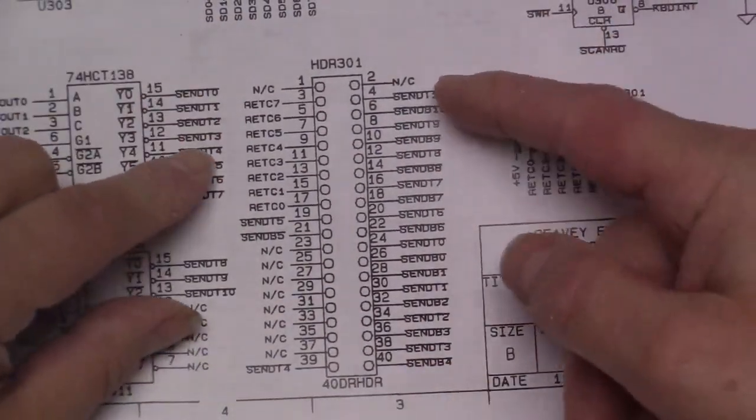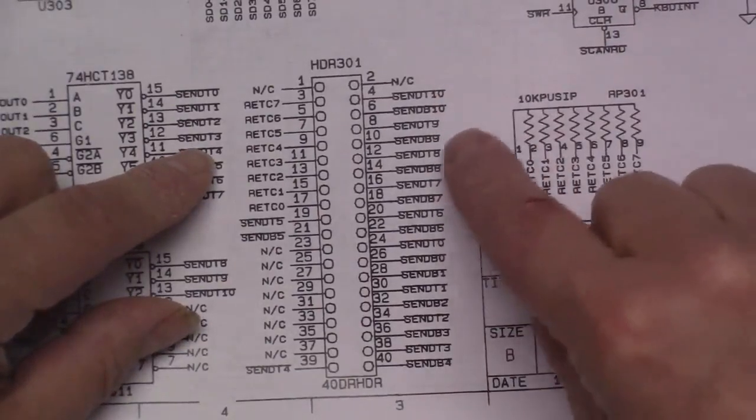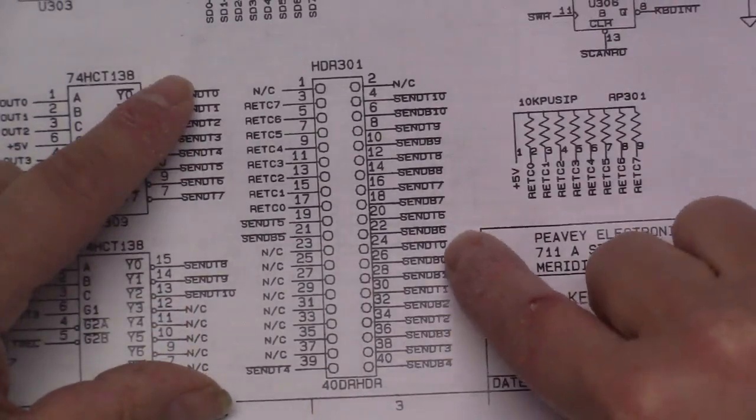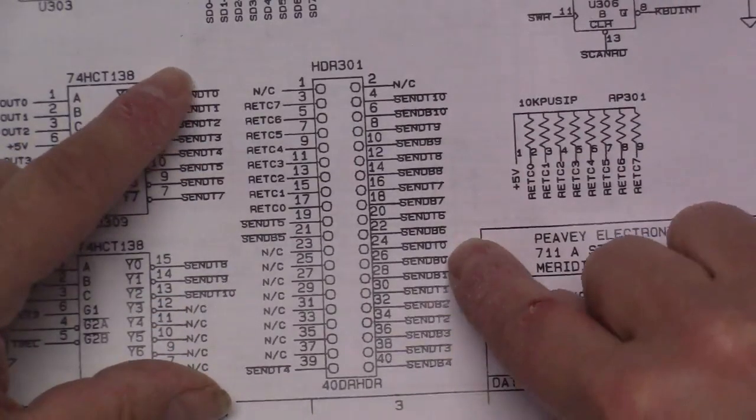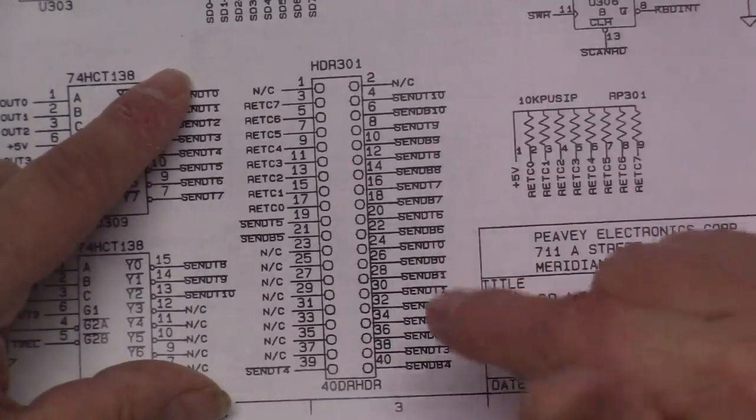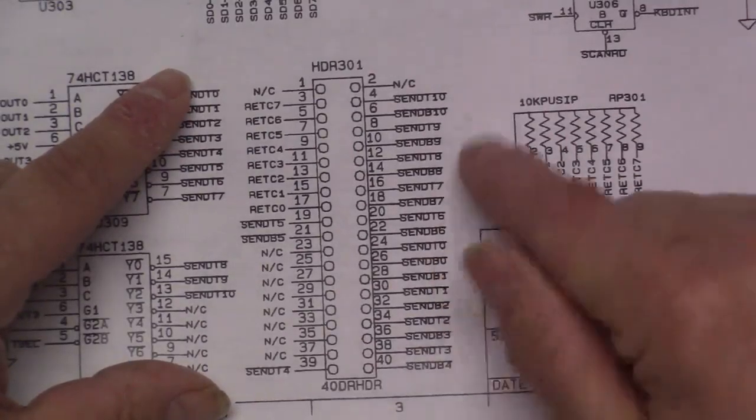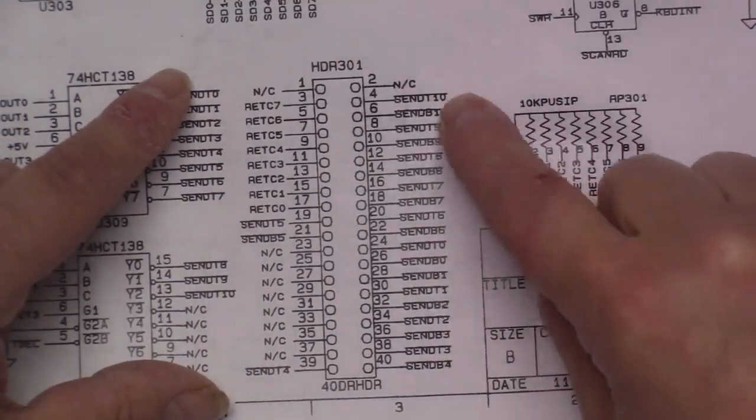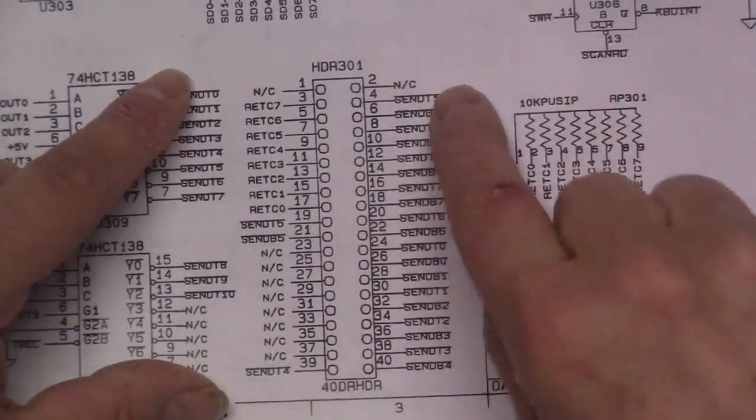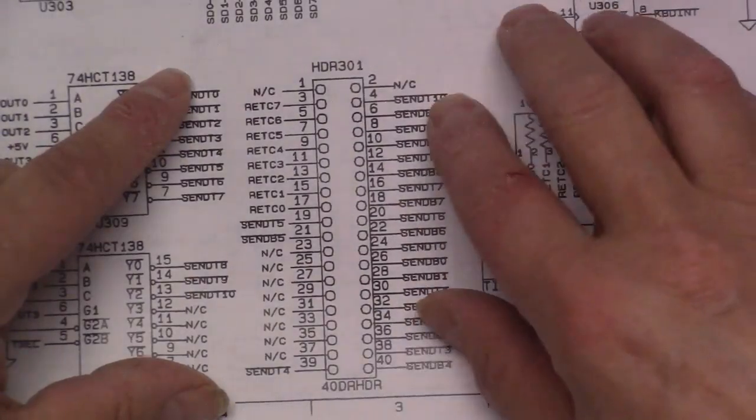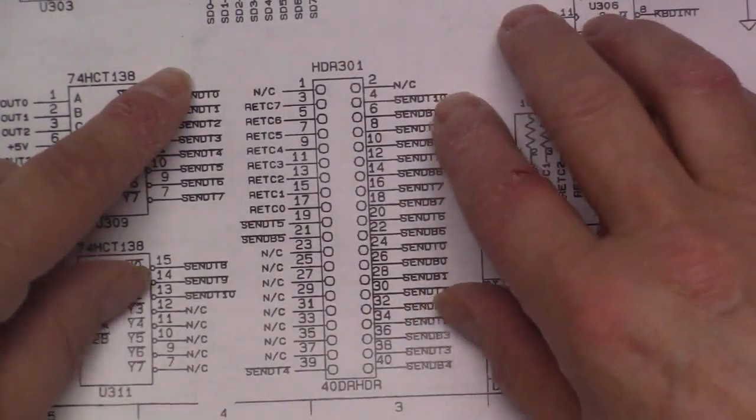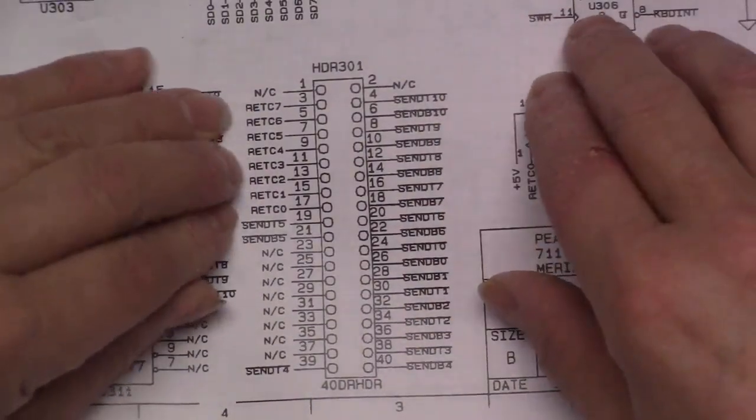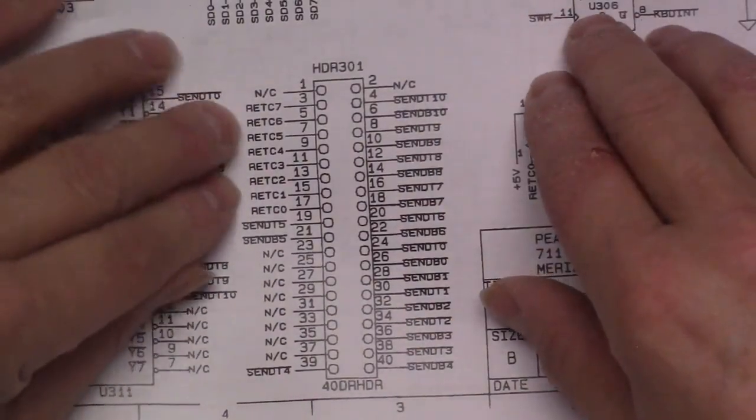So it looks like the send lines start at zero. There's send T zero and send B zero, so that must be the top and the bottom. It goes all the way up to ten, so there's twenty sends all together. Then there's eight returns, so you can read that with a byte easily.